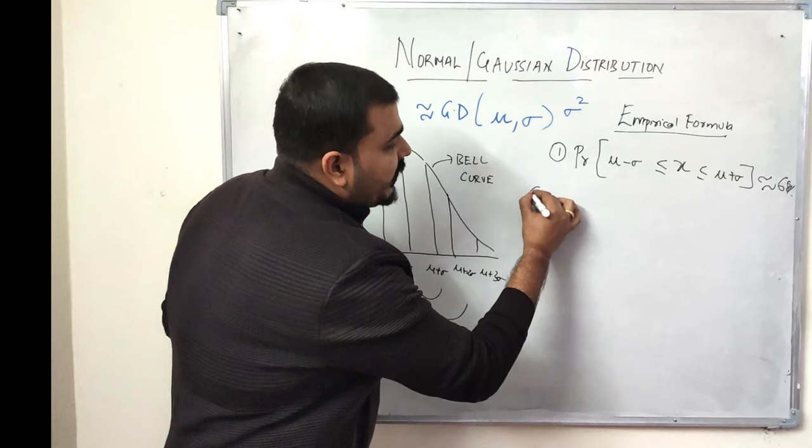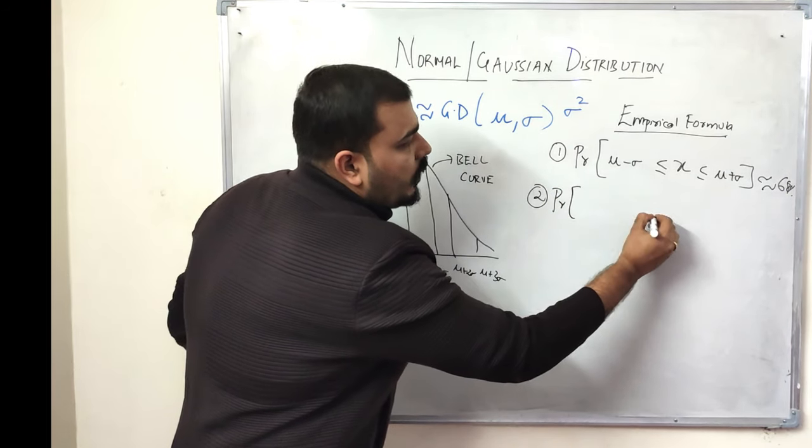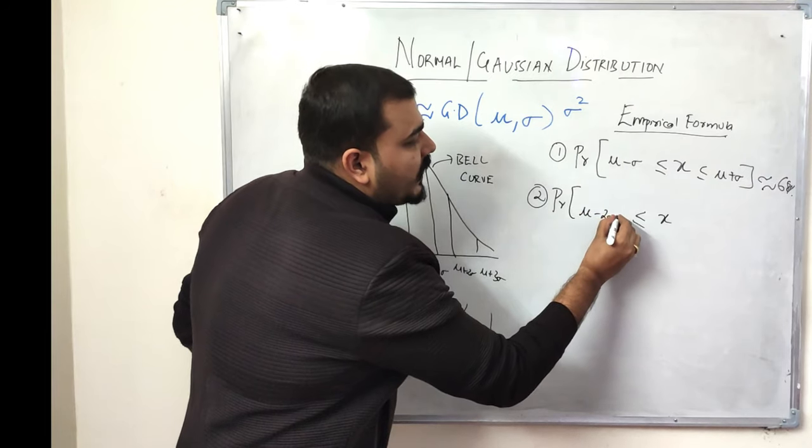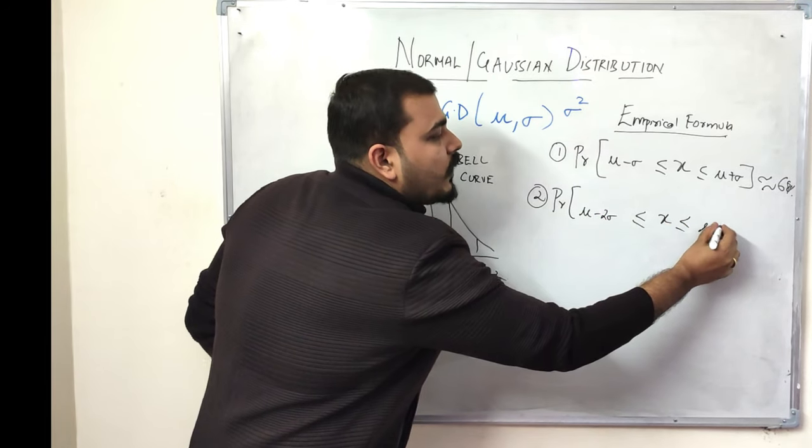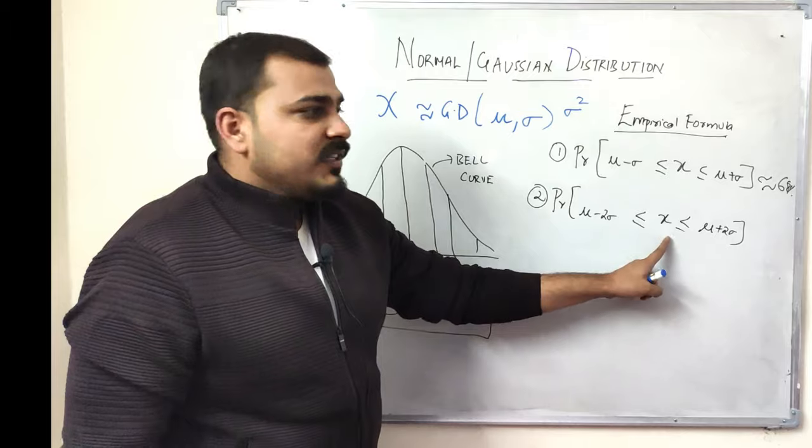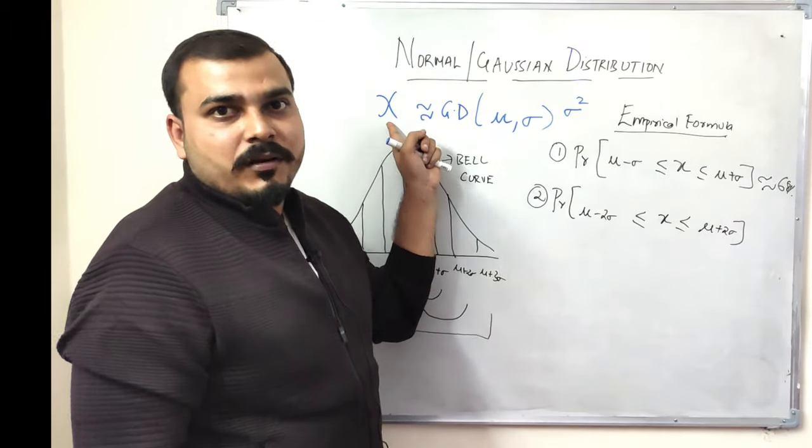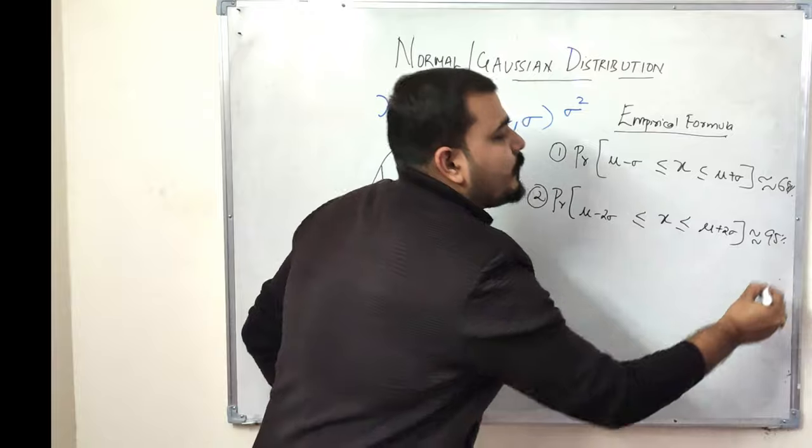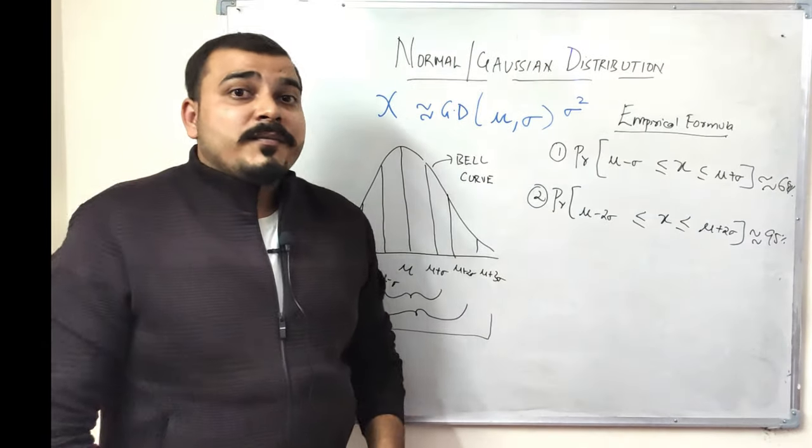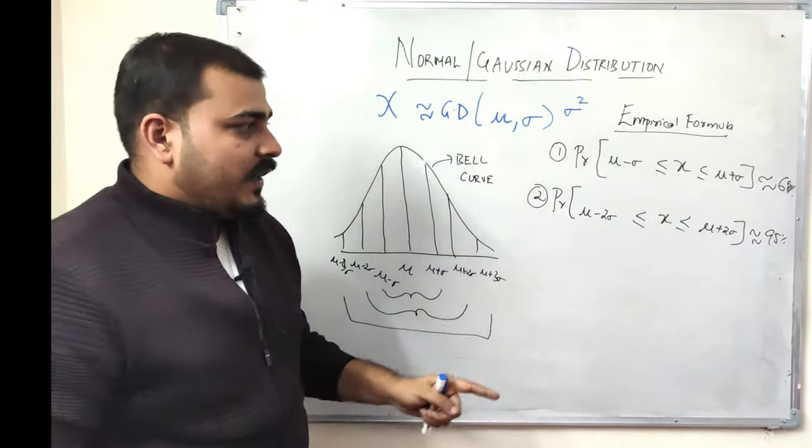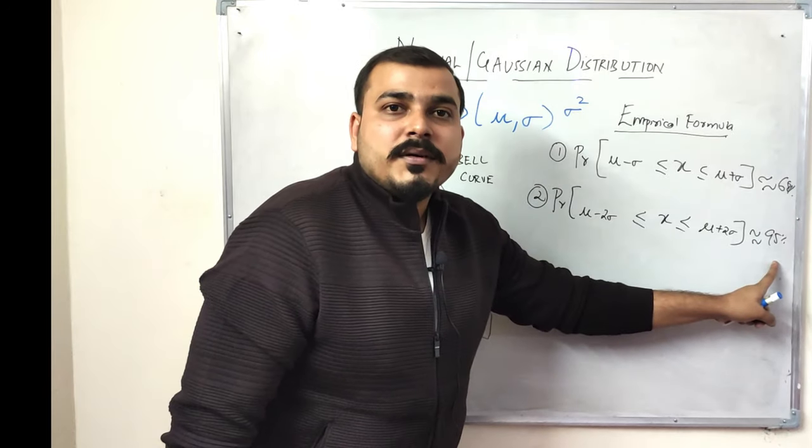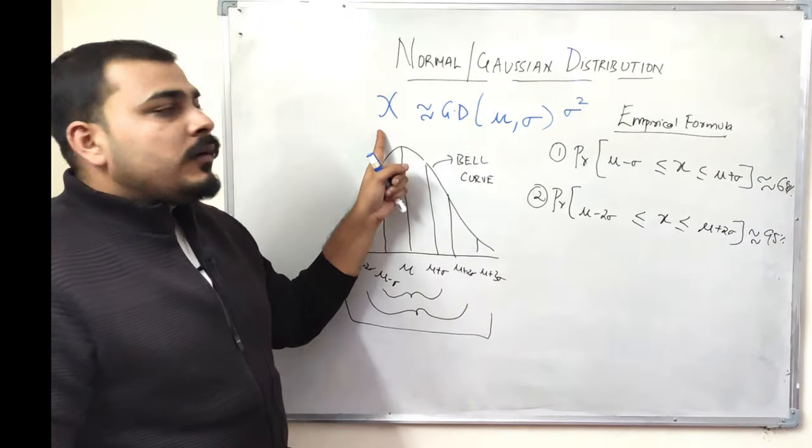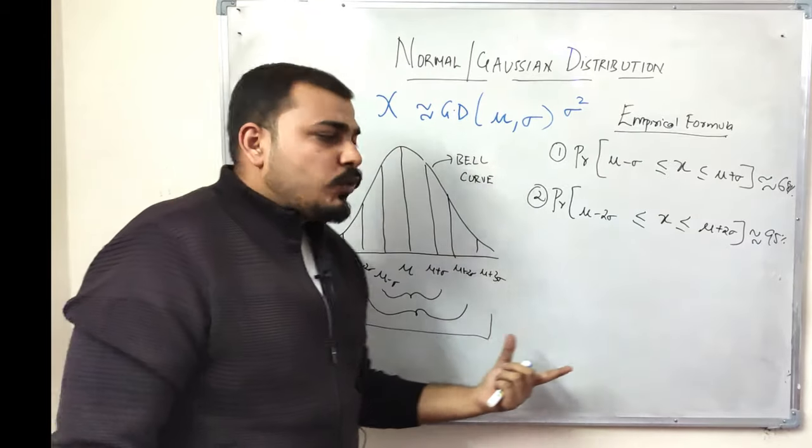Similarly, the second point says that the probability of a variable that falls between mu minus 2 sigma and mu plus 2 sigma is approximately 95 percent. This specifies that 95 percent of the data points belonging to this random variable fall within the range of two standard deviations.